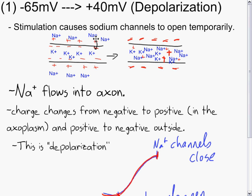This reverses the charge on this section of the membrane of the neuron. It goes from being negative on the inside and positive on the outside, to positive on the inside and negative on the outside. So the sodium, both the sodium and potassium are on the inside of the cell, and negative is on the outside. So the sodium flows into the axon. The charge changes from negative to positive in the axoplasm and positive to negative outside. This is known as depolarization.